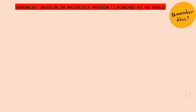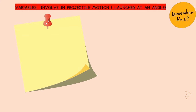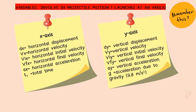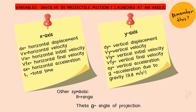Let us identify the different variables in projectile motion. For the vertical axis (y-axis), these are the different variables. You may also encounter other symbols such as R, which is equivalent to the range, and theta, which is the angle of projection.